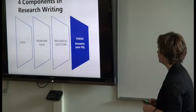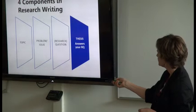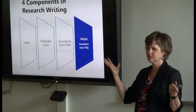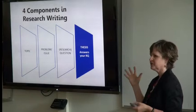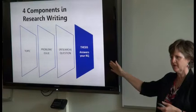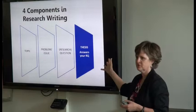You start with a broad topic area — maybe your advisor works in a certain area. Then you identify problems or issues in that area, and get down to your actual research question: what specific question do you want to focus on? Then the thesis answers your research question. The experiments you do and the results you get should ideally answer it.